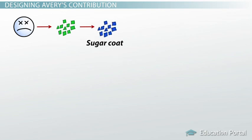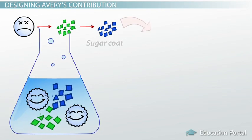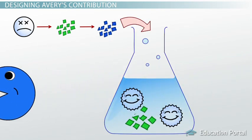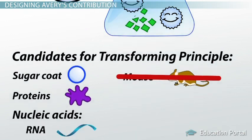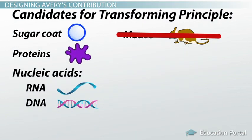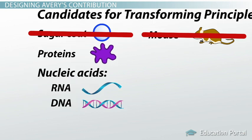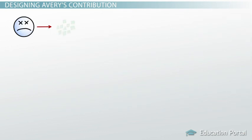Next, Avery tested whether the sugar coat was the transforming principle. He used an enzyme to destroy the sugar coat inside the lysate and found that the resulting mixture could still transform bacteria. This told him that the live R-bacteria were not just making their own sugar coat out of pieces from the dead S-cells — they were getting transformed by something else.